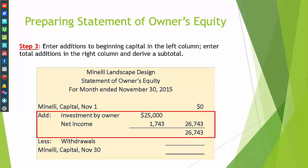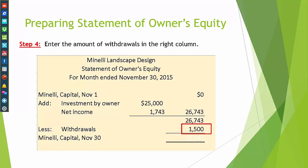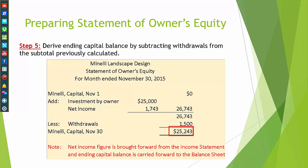This gives us total additions of $26,743, which will be carried to the right column. This is also the subtotal because we started with a zero balance. Step 4: we entered the amount of the withdrawal in the right column beneath the subtotal. We derived the ending capital balance by subtracting $1,500 from the subtotal of $26,743, giving us an ending capital balance on November 30th of $25,243.